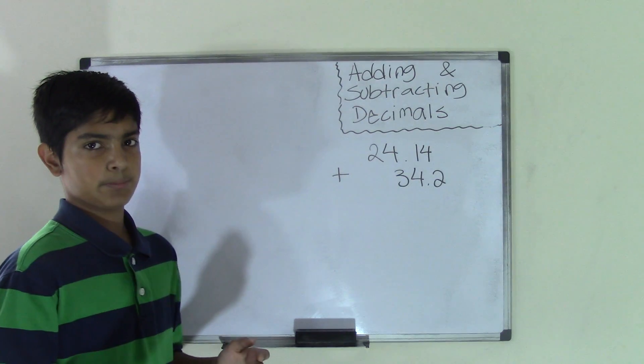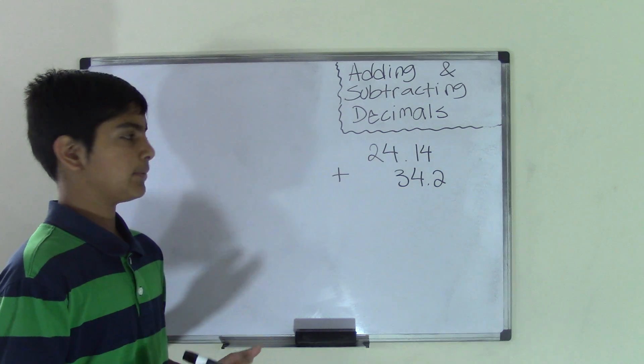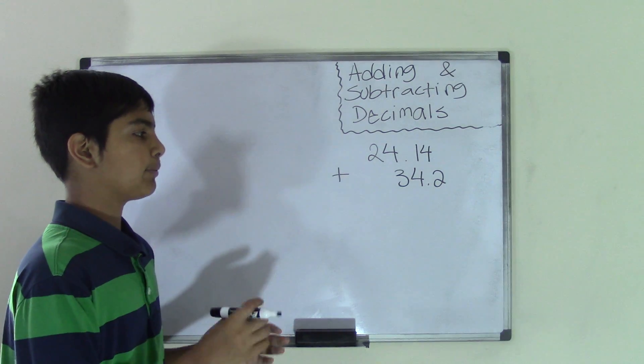Now before we do anything with addition, we first need to line up decimal points. And what I mean by that is that both the decimal points should be on top of each other.